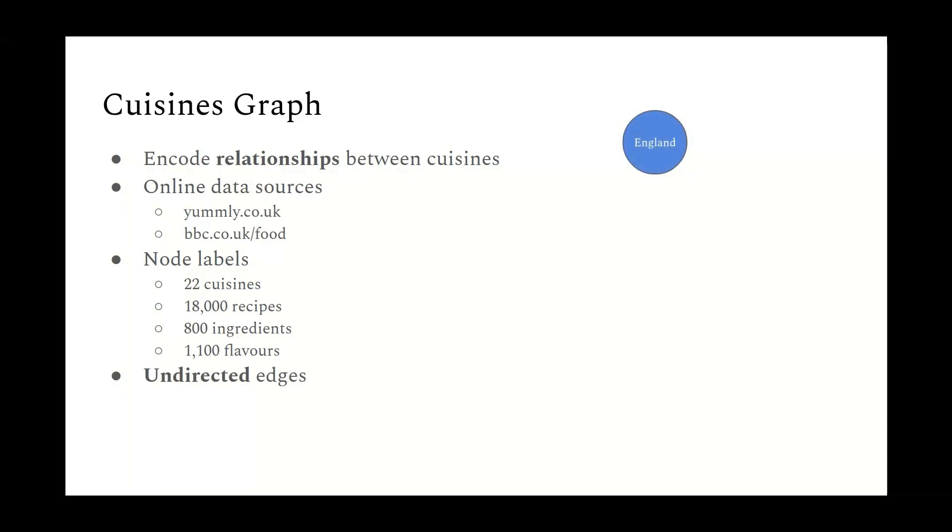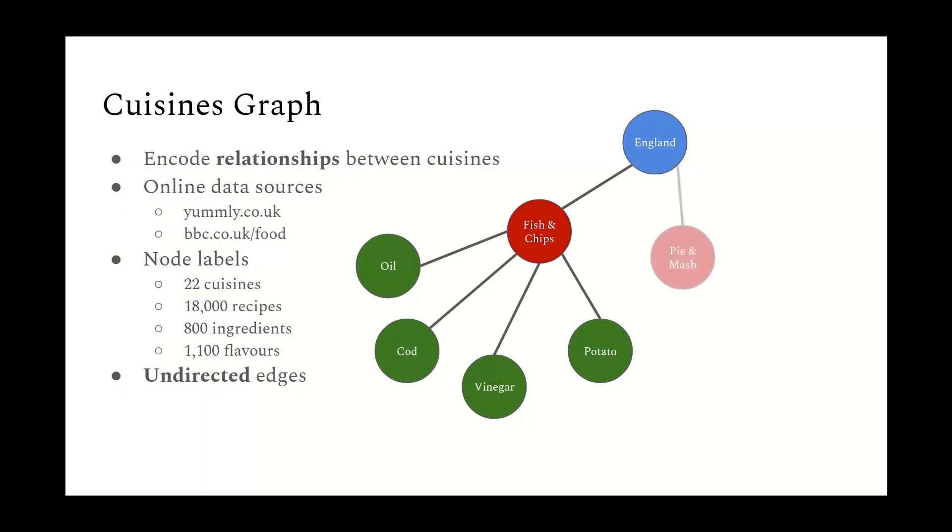And so in order to do this, we crawled a number of popular recipe websites. There's one called Yumly, which is based in California, and there's also the BBC Food website based here in the UK. And using the recipes from these websites, we constructed a graph with four types of node. First of all, we have cuisine nodes, the countries themselves. Then we had 18,000 recipes, and we had 800 unique ingredients that are shared amongst all those recipes. And then we also had flavors as represented by flavor compounds, so chemicals. And there were 1,100 of those. And the graph that we construct is undirected.